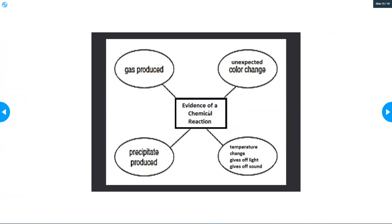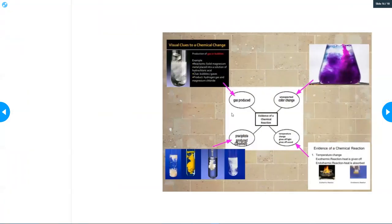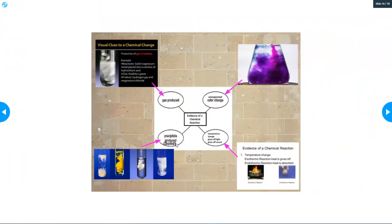So evidence of a chemical reaction when a gas is produced, when there is an unexpected color change, when you have a temperature change, or when a precipitate or solid is produced. So here are some examples. In this one, you can see the solids forming in the beakers. In this one, you can see the gas bubbles. In this one, you can see the color changing. And in this one, you know that there's a temperature change because the fire is burning the wood.